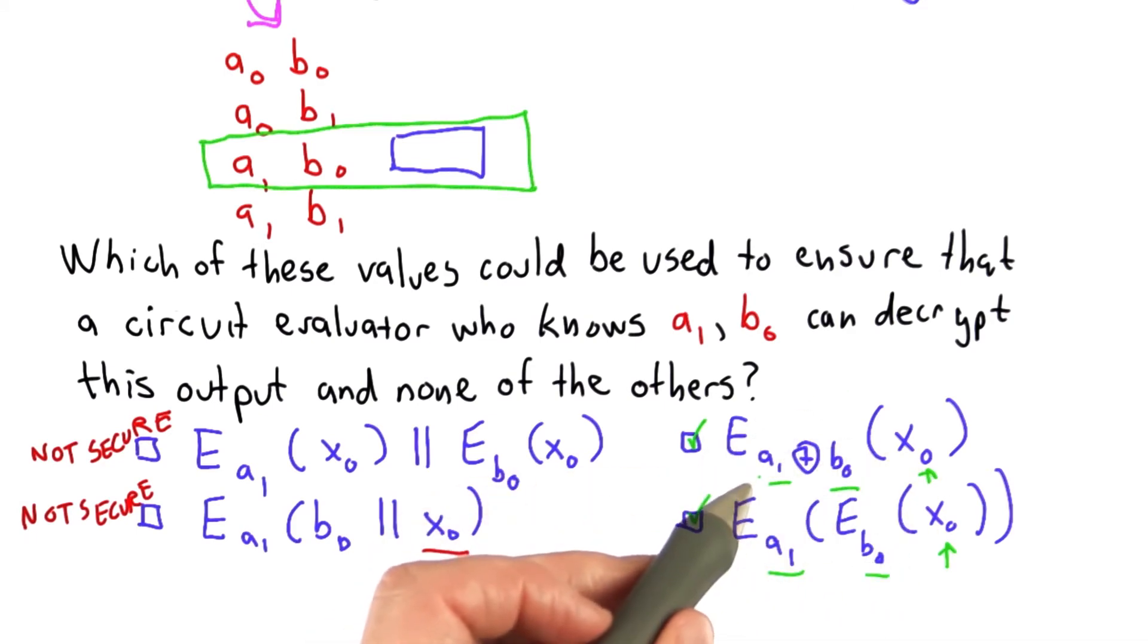An evaluator who knows only one of those can't determine the key for this encryption, since this is the XOR of those two values and it depends on both of them.